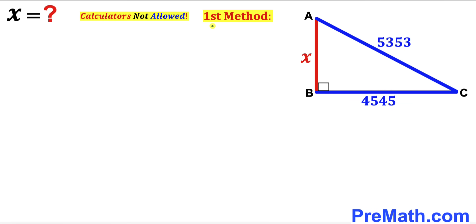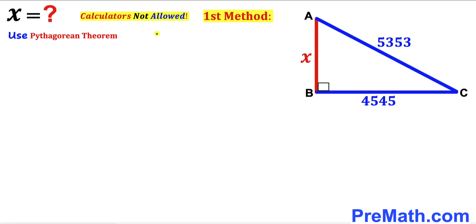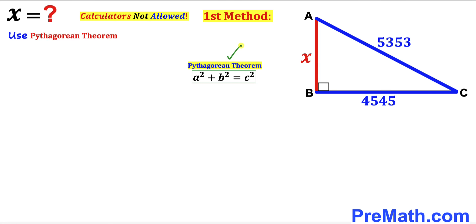Here is our very first method. Let's focus on right triangle ABC and apply the Pythagorean theorem to find the value of x. The Pythagorean theorem states a² + b² = c². In our case the hypotenuse is 5353 and the two other legs are 4545 and x.